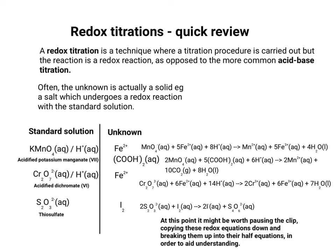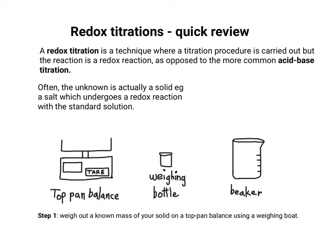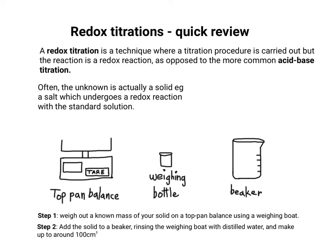Now let's talk about the actual practical procedure — the steps you'd take to perform your redox titration. Assuming we're starting with a solid, you weigh out a known mass of it on a top pan balance using a weighing boat. Then add your solid to a beaker, rinse the weighing boat with distilled water to make sure all the solid is transferred, and make it up to around 100 cm³ using distilled water.